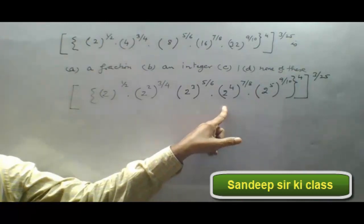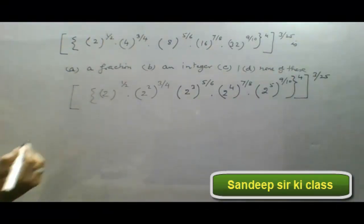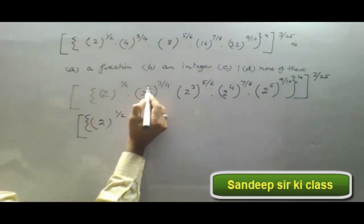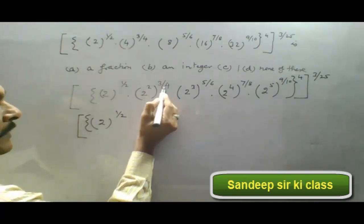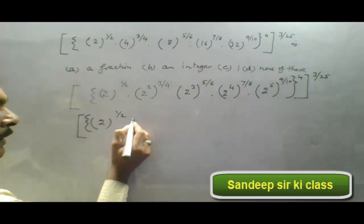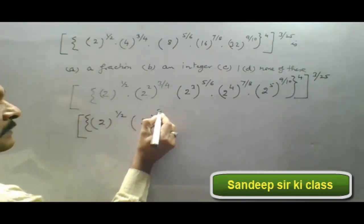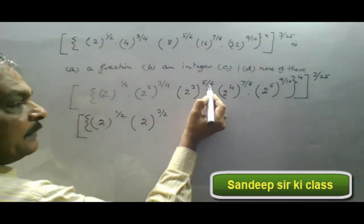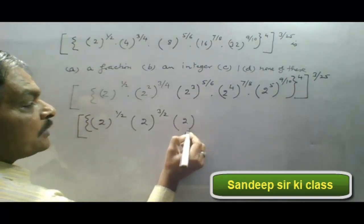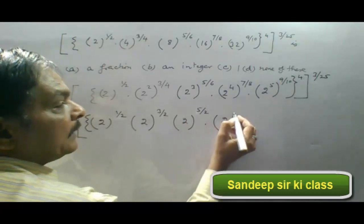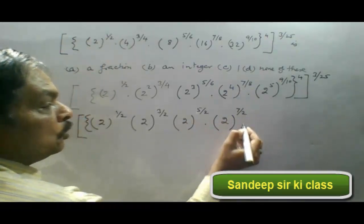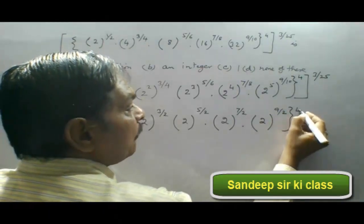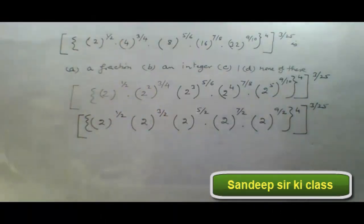When we write each term as 2 raised to a single power, the expression reduces further. The first term is 2 to the power 1 upon 2. In the second term, power 2 multiplied by 3 upon 4 becomes 3 upon 2. Next, power 3 multiplied by 5 upon 6 becomes 5 upon 2. Accordingly we get 2 raised to the power 7 upon 2, and the last term is 2 raised to the power 9 upon 2, whole raised to the power 4, whole raised to the power 3 upon 25.